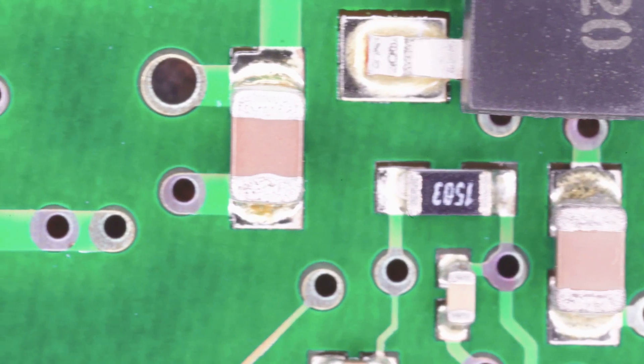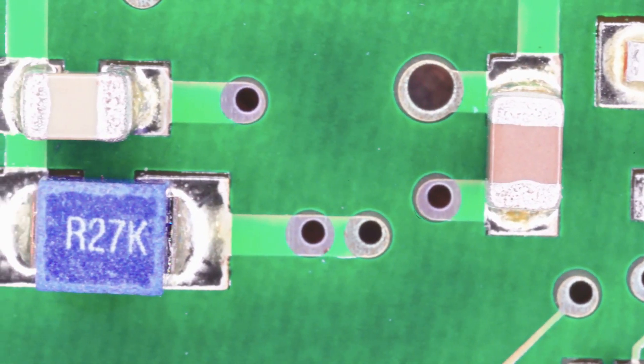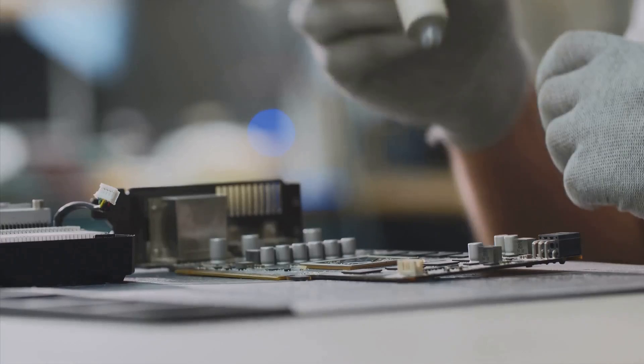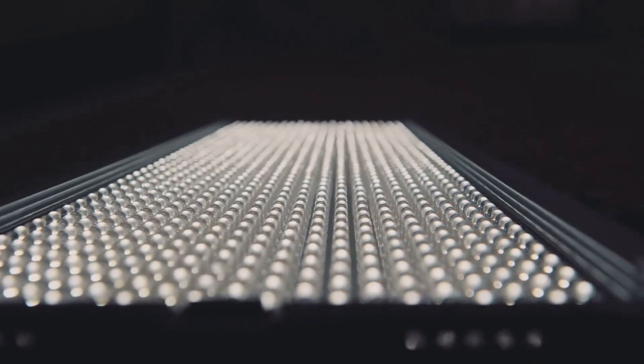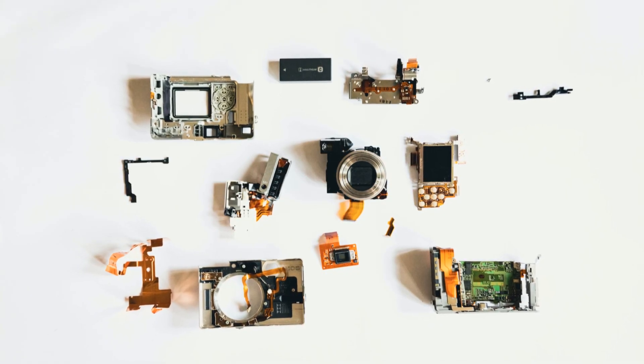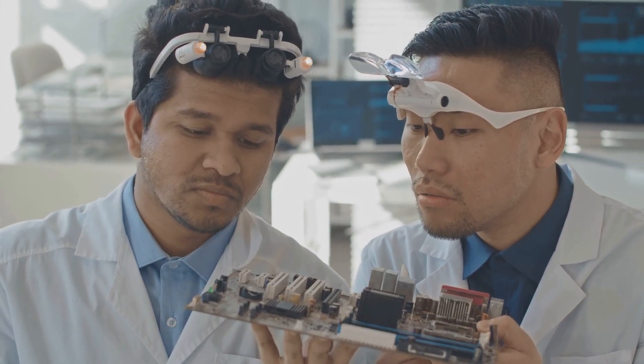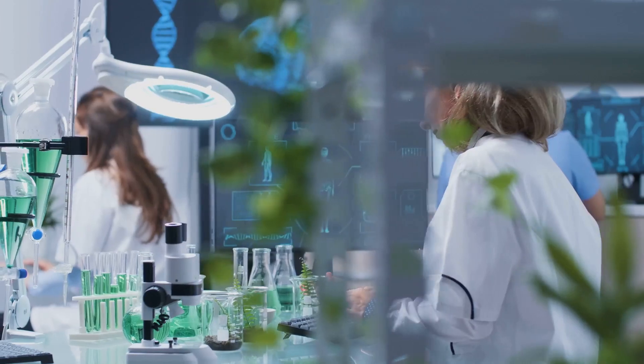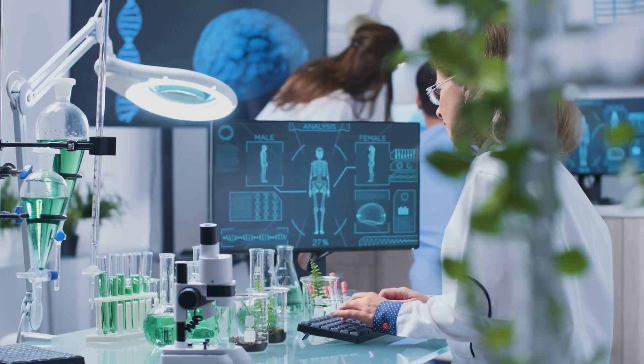Diodes, often referred to as the one-way streets of electronics, are fundamental components that play a crucial role in shaping our modern world. From simple rectifiers that convert AC power to DC power to complex LEDs that illuminate our homes and screens, diodes are indispensable building blocks in countless electronic devices. Their ability to control the flow of current in one direction has enabled engineers and inventors to develop a wide range of electronic circuits and systems that power our lives. As technology advances, we can expect to see even more innovative applications of diodes, further expanding the horizons of what's possible in the world of electronics.